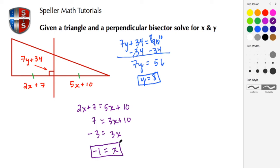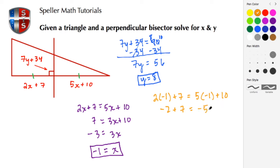Now let's go back and check our answers. We said X is negative 1, so we compute 2 times negative 1 plus 7, which should equal 5 times negative 1 plus 10. On the left, 2 times negative 1 is negative 2, and negative 2 plus 7 is positive 5. On the right, negative 5 plus 10 is also positive 5. So the length of those segments is 5, and our algebra checks out.